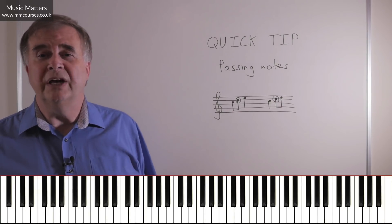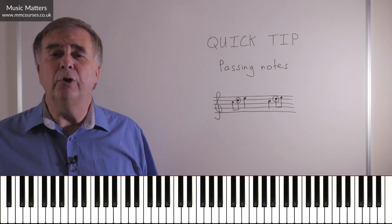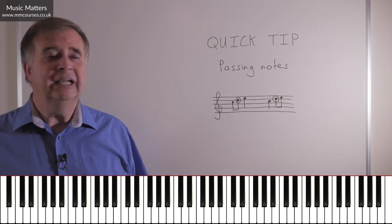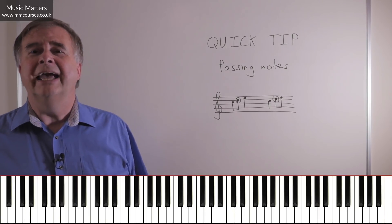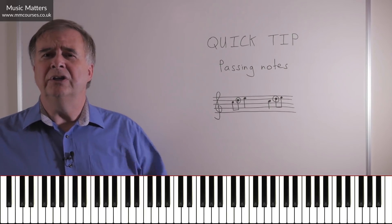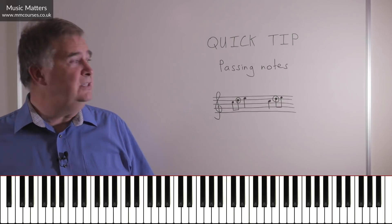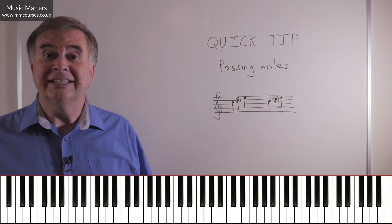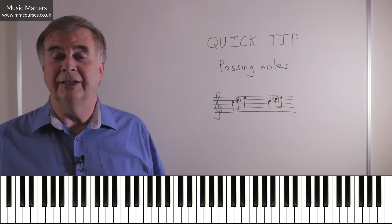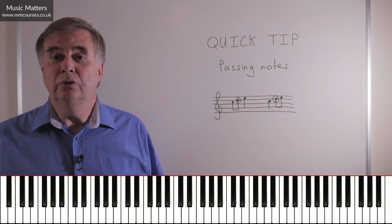So for example, if you were writing a song and you just want something to be a bit more florid in the melody, you could use an unaccented passing note. If you're writing a song and you've got a particularly poignant word that you want to express, you might think about using an accented passing note. So there we are, an introduction to passing notes.